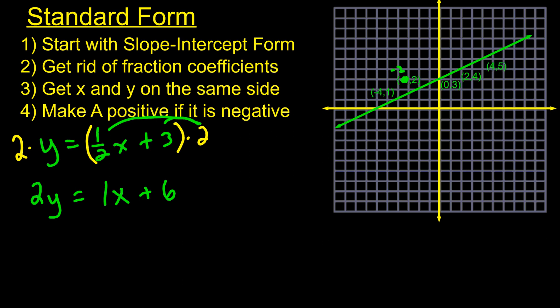If you have multiple fractions, multiply by one denominator, then the other on the next step, and you'll get rid of all the fractions in front of x and y. If the y-intercept is a fraction, you don't have to worry about making it a whole number. The next step is to get x and y on the same side, so we subtract 1x, which gives us negative 1x plus 2y equals 6.